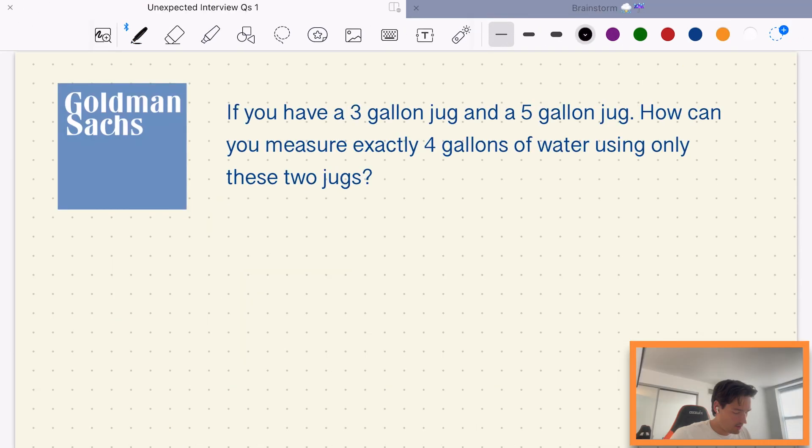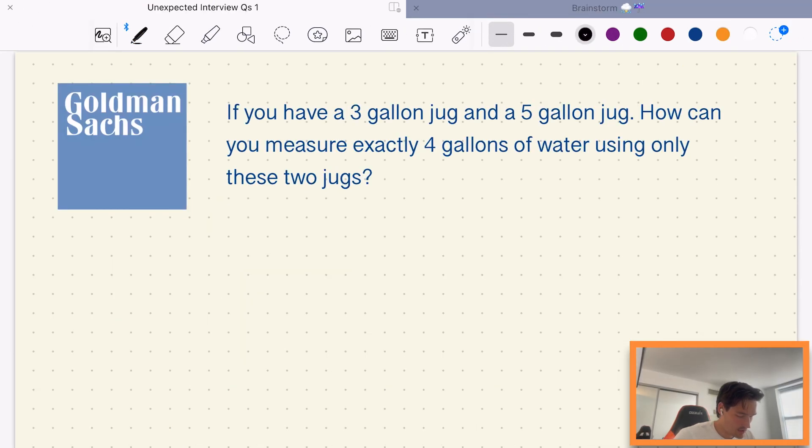So the next question here comes from Goldman Sachs and it's: if you have a 3 gallon jug and a 5 gallon jug, how can you measure exactly 4 gallons of water using only these two jugs? So this is a question that you might encounter in maybe like an investment banking interview, you could also encounter this in like a consulting interview.